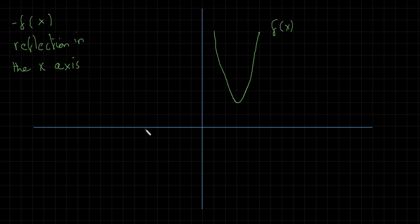Okay finally we come on to negatives. Now in negatives both x and y misbehave. So here we have negative f of x. And we find that is a reflection in the x axis.